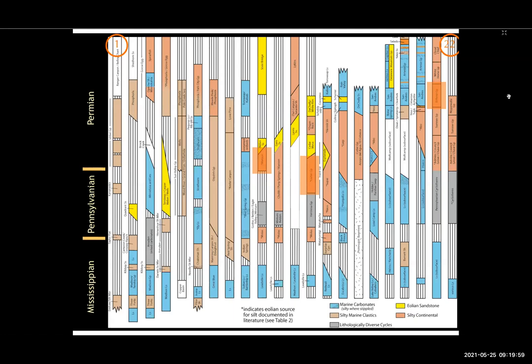This series of columns goes from the west, number one, off to just east of Oklahoma on the southeast, number 22. In the blue and gray colors are either lithologically mixed or marine carbonates — the blue are limestone dominated. The brownish are silty marine clastics and the yellow eolian sandstone. The orange colors are the silty continental strata, many of which are loess — paleoloess. In the middle are highlighted the Maroon Formation and the Cutler Group, and off to the upper right is part of the Blaine in Oklahoma.